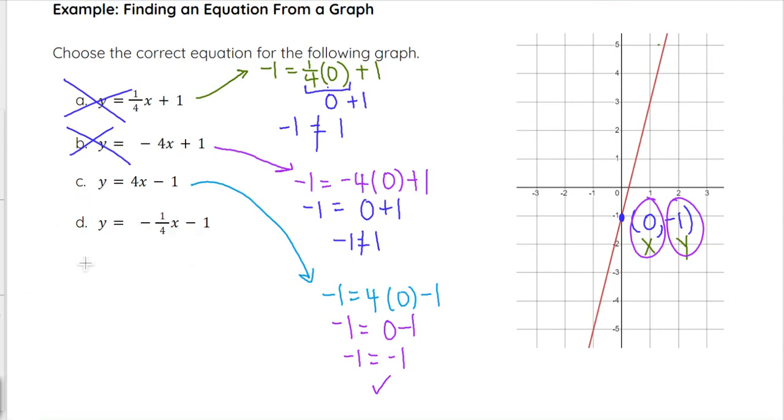Before we go on to that second point, let's look at D, because if we're lucky, then 0 negative 1 won't work on D and we'd eliminate that. Then we would know that C is the correct answer without checking any additional points.